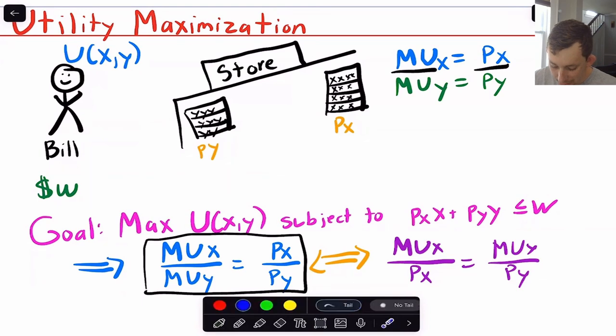And then one thing that's sometimes helpful is you can rearrange that fraction to get MUx over Px, which is just benefit per cost, or marginal benefit per marginal cost of x needs to equal marginal benefit per marginal cost of y. Or another thing you can think about is this is bang for buck of x, and at the optimum it's got to equal bang for buck of y.